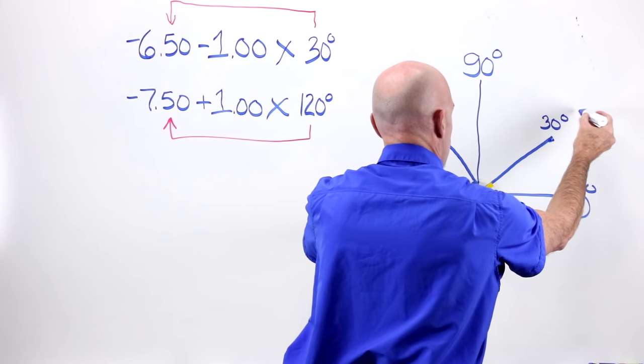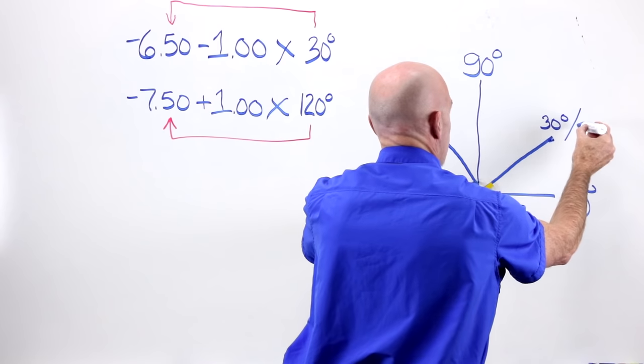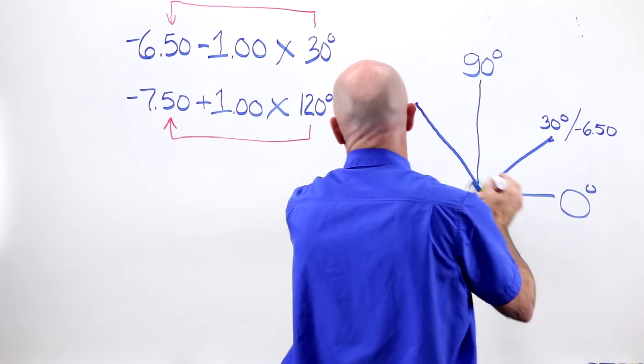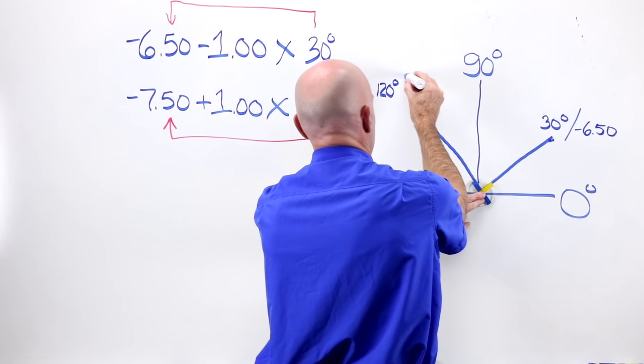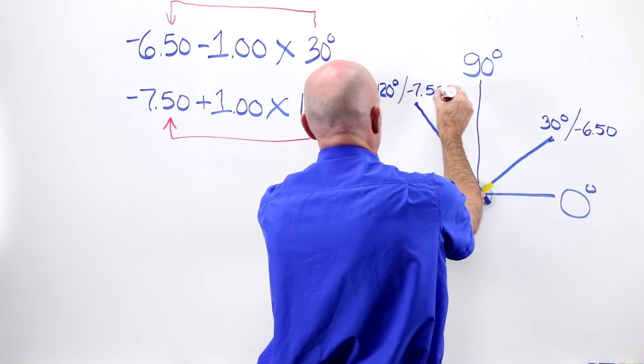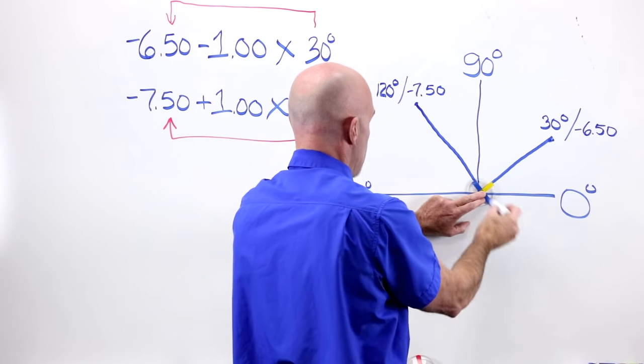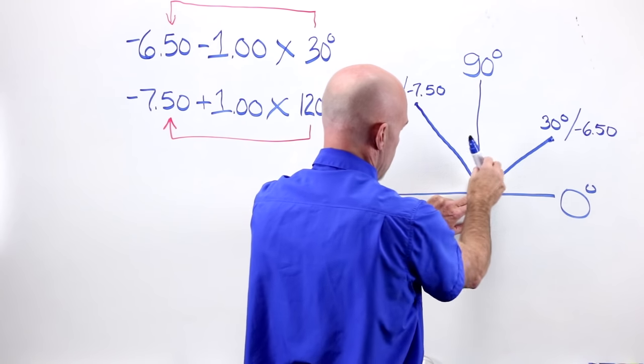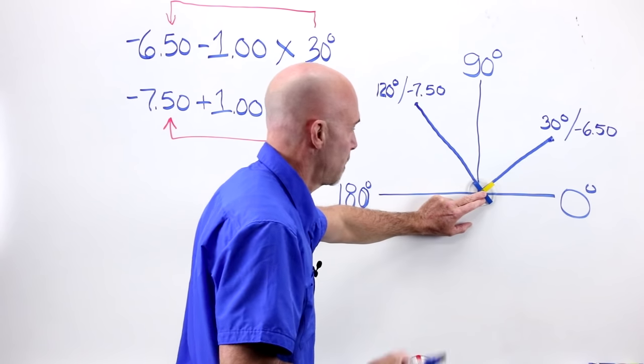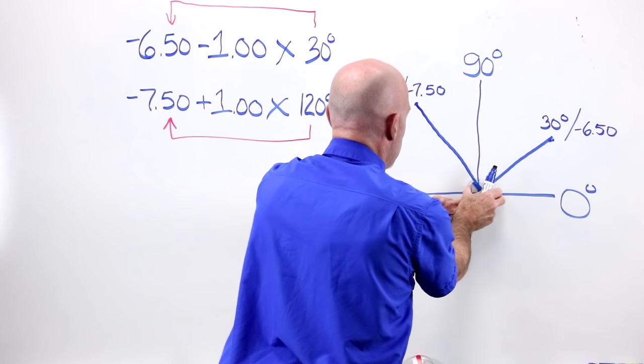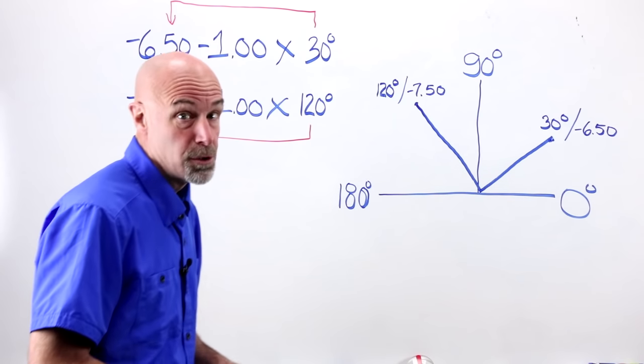At 30 degrees, I have got minus 650. And at 120 degrees, I've got minus 750. And those correspond with the strongest point, weakest point on my lens, literally drawing it out from those curves, from the thinnest point and thickest point. That would be example number two.